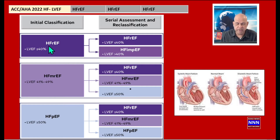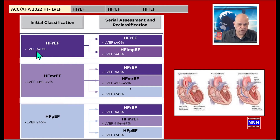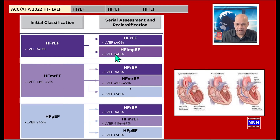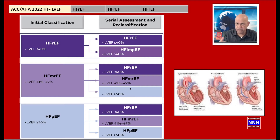You're all familiar with HFrEF and HFpEF. HFrEF is heart failure with reduced ejection fraction — less than 40 percent. These patients may have an ejection fraction of around 40 percent, greater than 40 percent, but anything below 50 is considered heart failure with reduced ejection fraction.